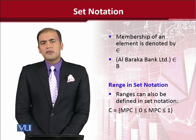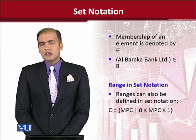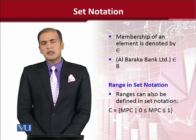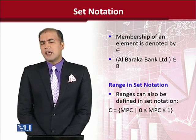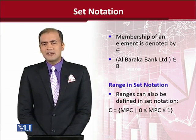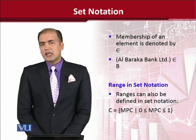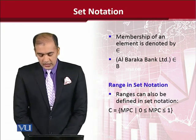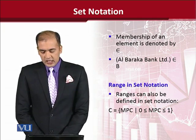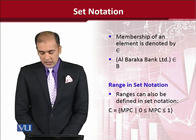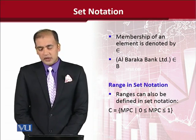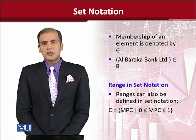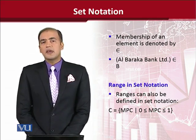Set notation is quite versatile and allows us to specify ranges that we usually see in economics. In economics, the marginal propensity to consume (MPC) has a certain range that starts from 0 and ends at 1. So if I am to write it in set notation, I will write: C is a set and MPC is the variable such that MPC is greater than or equal to 0 and less than or equal to 1. In this way we can also specify ranges in set notation for economic discussions.